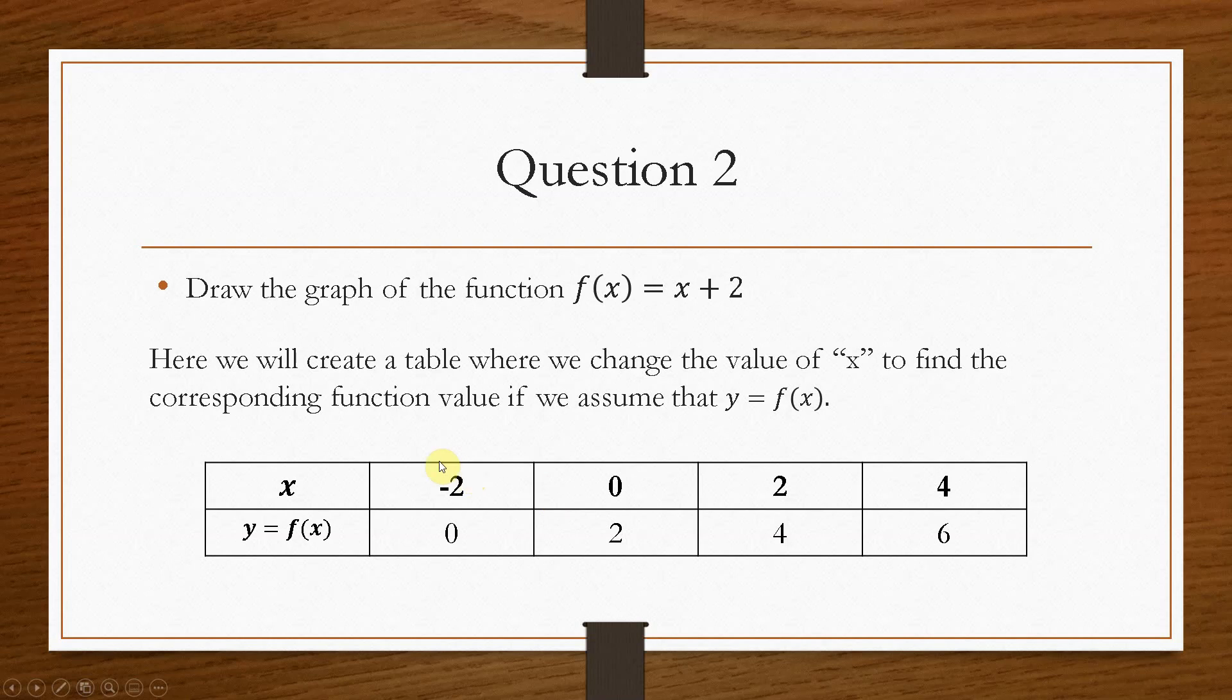So these are basically coordinates, so minus 2, 0, 0, 2, 2, 4, and 4, 6. Because if we take minus 2 and put it in here, minus 2 plus 2 is 0. And then if we replace x with 0, 0 plus 2 is 2. And then if we replace x with 2, it becomes 4 for the y, etc. And that's how we begin to construct our graph.